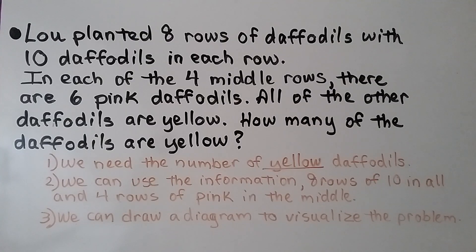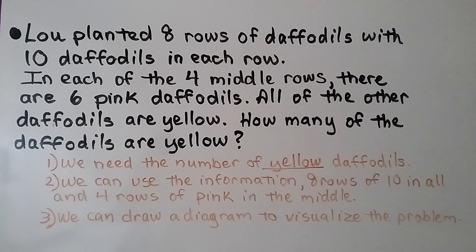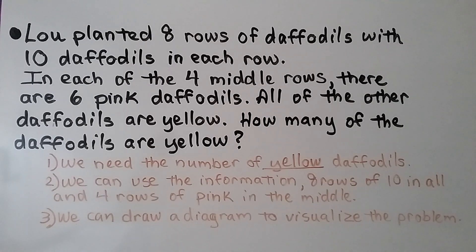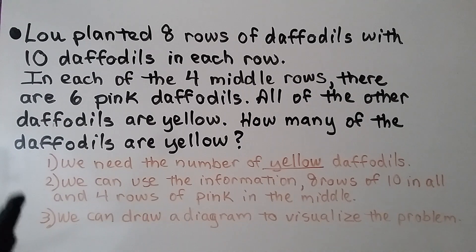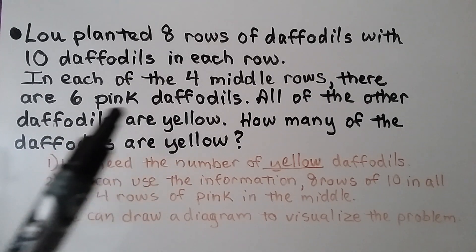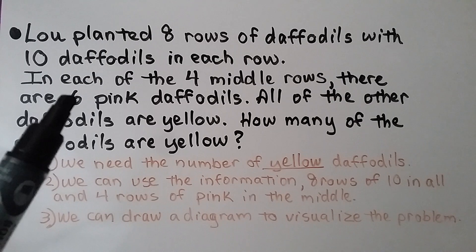Lou planted eight rows of daffodils with ten daffodils in each row. In each of the four middle rows, there are six pink daffodils. All of the other daffodils are yellow. How many of the daffodils are yellow? The first thing we need to do is notice that we need the number of yellow daffodils — that's what it's asking for. Then we can use the information: eight rows of ten in each row, and that the four middle rows have six pink daffodils.